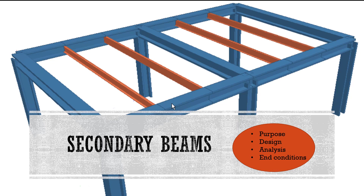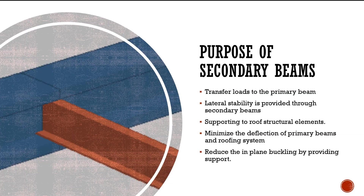The main purposes include transferring loads to the primary beams, providing lateral stability to the main beams, and supporting the roof structural elements — whatever roofing system is provided for buildings, industrial buildings, or any kind of structure.